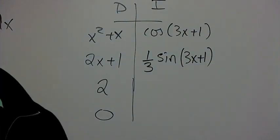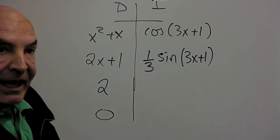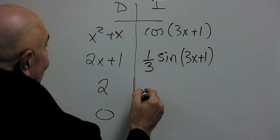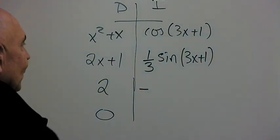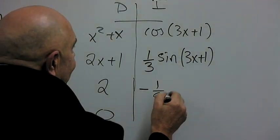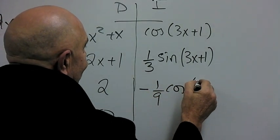When you integrate sine, it flips back to cosine, except there's a minus, negative sine. So it will become minus, and it will be one-third of one-third, or one-ninth cosine of 3x plus 1.